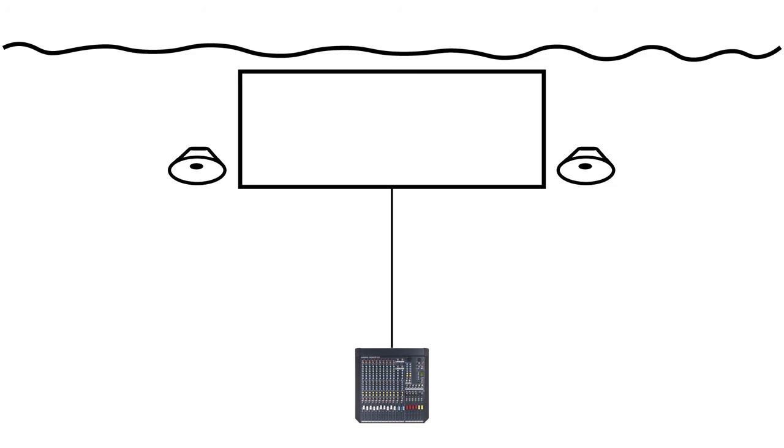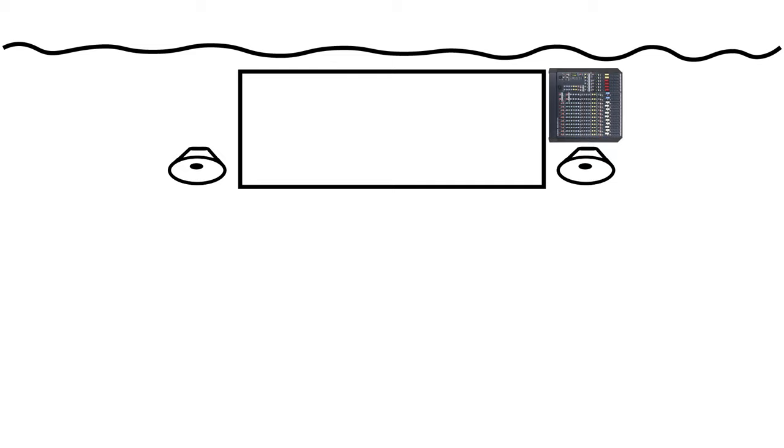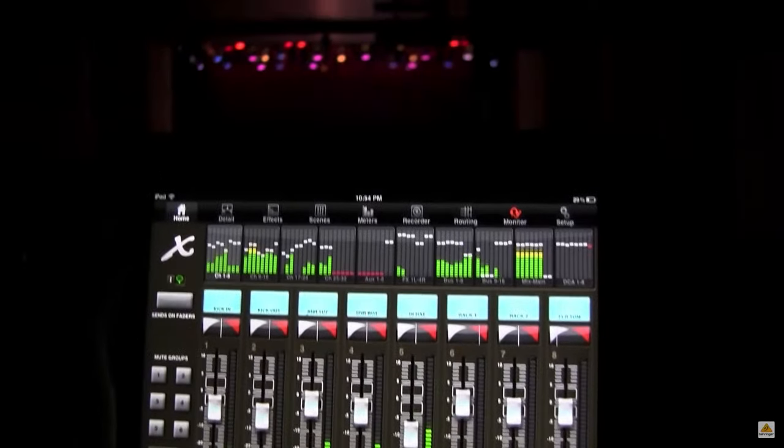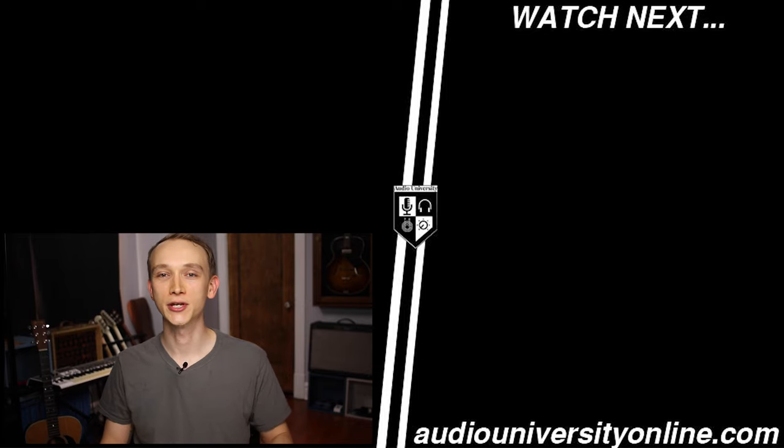In an ideal world, your mixer will always be in the center of the audience so you can hear what the audience is hearing while you mix. But in reality, your mixer might be tucked away behind the stage, making it difficult to hear while controlling the mixer. This is where wireless control comes in — most digital mixers can be connected to Wi-Fi routers and controlled by a tablet remotely, so you can be in the audience making adjustments to faders and effects while standing in front of the speakers.